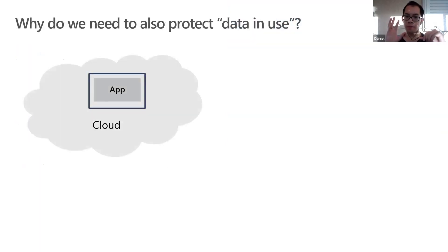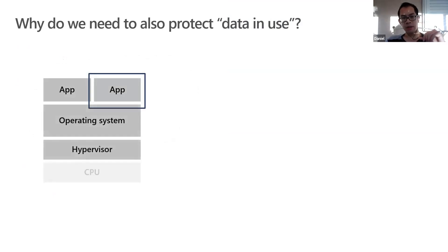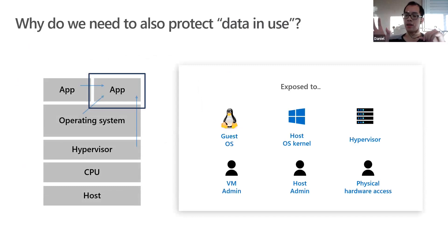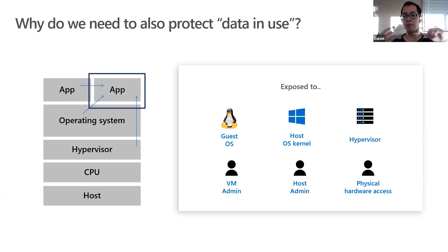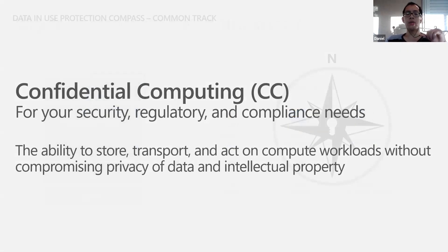Now I'll talk about the data-in-use aspect. You can secure data at rest — for example, encrypting your hard drive so that if someone steals your laptop they can't decrypt the contents without the key. You can also secure data in transit, like with HTTPS during online payments. But the big issue is how to encrypt data during computation. There have been no methods to secure data while it is actively being used in a program, and this exposes you to many different threats.